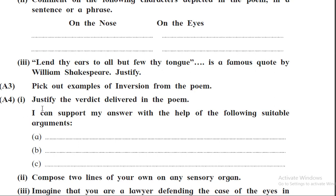Justify the verdict delivered in the poem. Whatever points are proven by the tongue — the spectacles are prepared according to the size of the ridge of the nose, a person without a nose cannot wear spectacles, and the nose had been wearing spectacles from time immemorial — these arguments are absolutely correct. Even though the eyes need spectacles for weak eyesight, a person without a nose cannot wear spectacles at all. However, the point of the eyes is also correct.